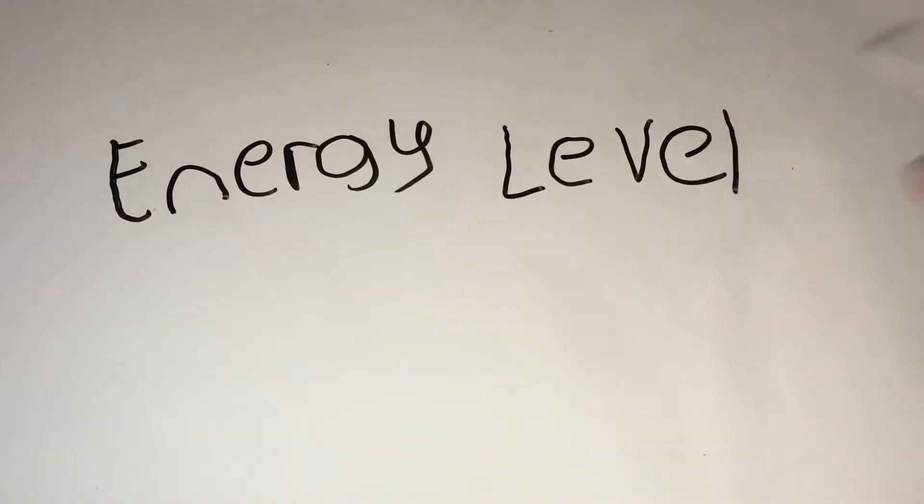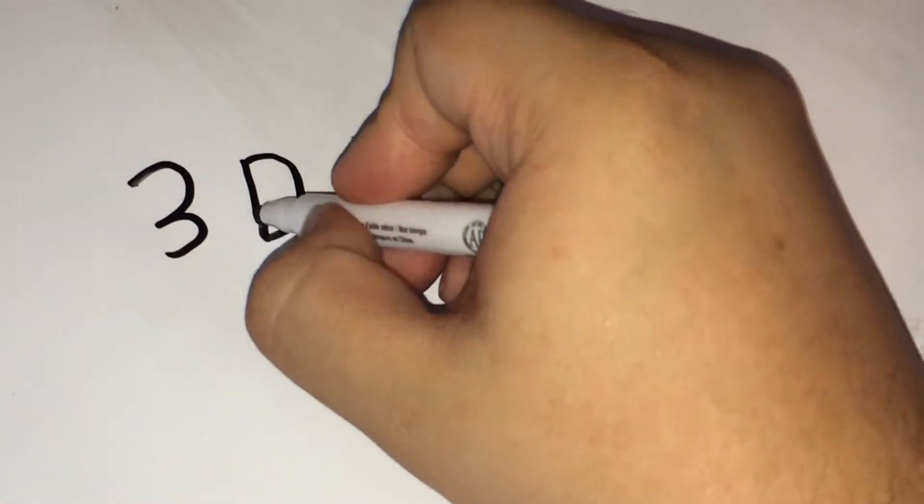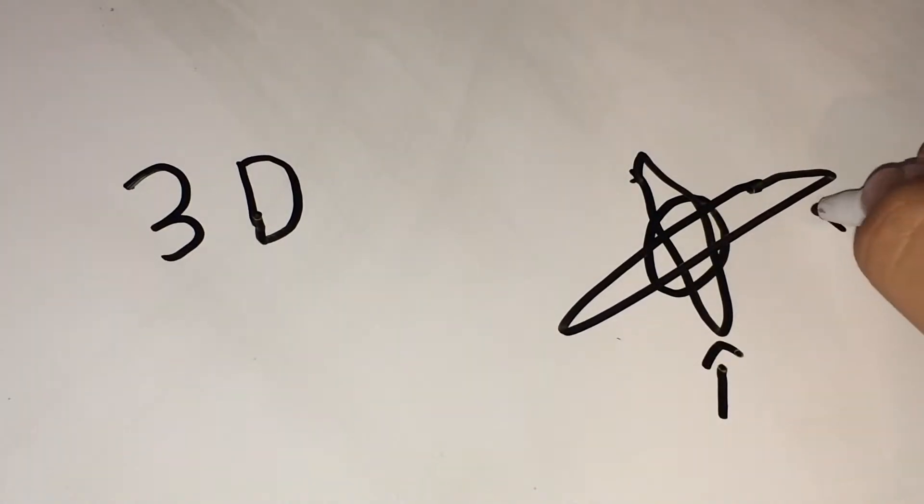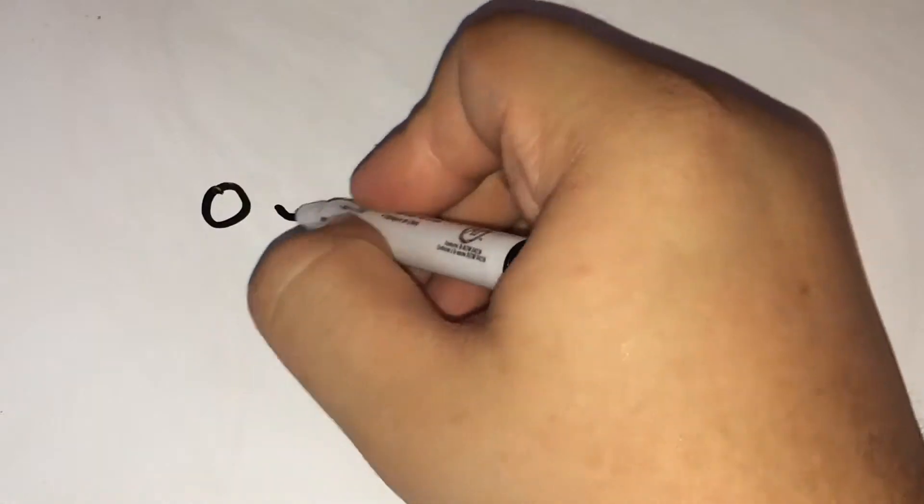First of all, orbital levels are an important thing to know. An orbital level is a three-dimensional space where an electron will more than likely be found. This is just an introductory video so I won't go into too much detail, that'll be for a later video.